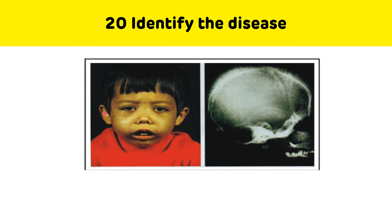Identify the disease. This is a case of thalassemia. These are the typical thalassemia facies, and there is a 'hair-on-end' appearance seen in the skull X-ray of thalassemia patients. Thalassemia is a hemoglobin disorder; there are two types — thalassemia major and thalassemia minor.